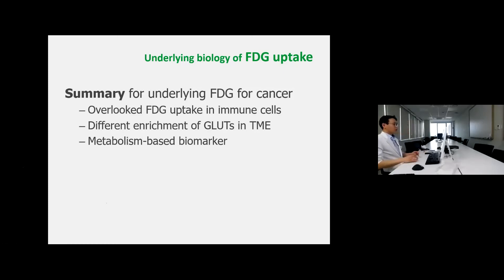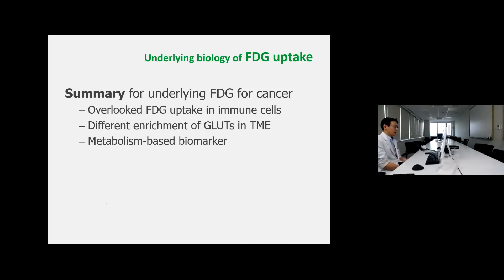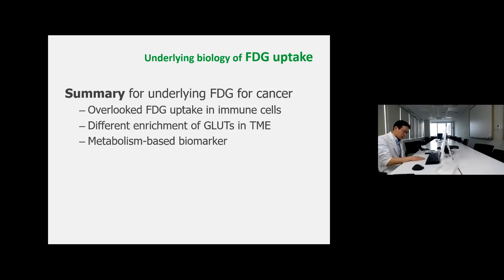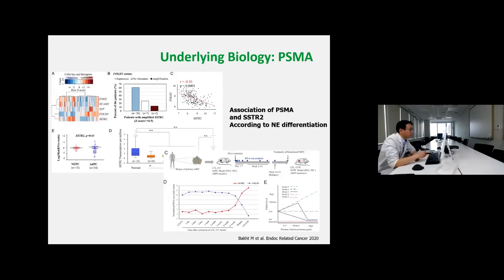This is a summary of the underlying FDG biology in cancer. We overlook FDG uptake in immune cells and the different enrichment of glucose transporters in the tumor microenvironment. By using this biology, we can imagine metabolism-based biomarkers, which may provide new information from FDG PET. Another study introduced correlative analysis using PET and omics data is an example of PSMA — PSMA is overexpressed in many prostate cancers.